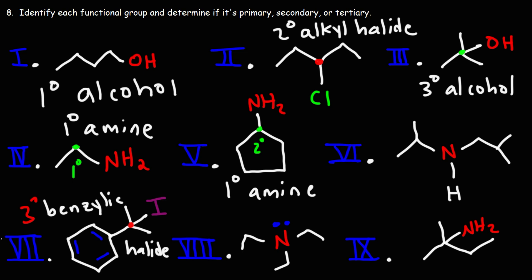Looking at number six, this nitrogen is attached to two carbon atoms, so that makes this a secondary amine. If you were to focus on the carbon atoms, notice that one carbon is secondary and the other is primary — but that's why we shouldn't focus on the carbon atom. Because nitrogen can bond to multiple carbon atoms, it doesn't make sense to define the type of amine based on the carbon atoms.